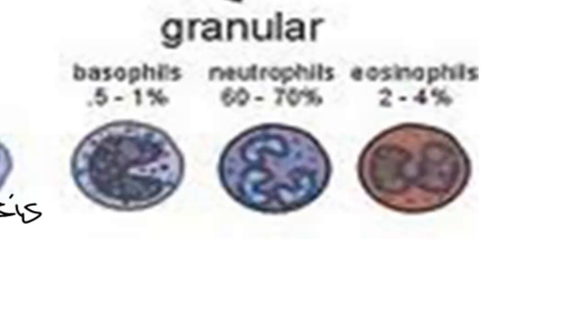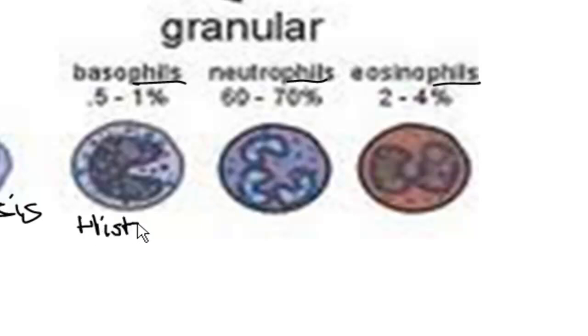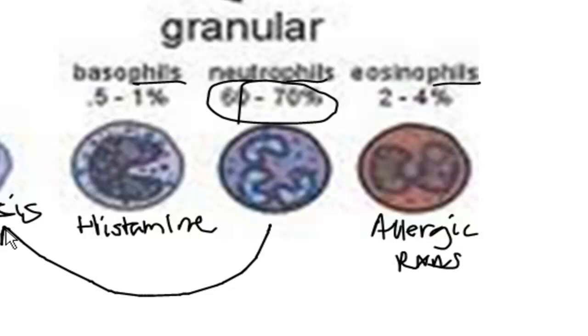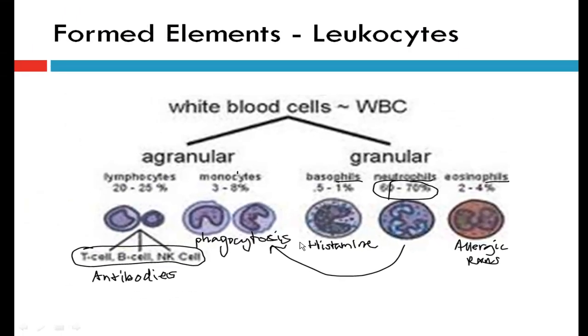On the other end of the spectrum are the granular white blood cells. These all have the prefix or suffix '-phil,' meaning they're filled with granules. Basophils produce histamine, which gets the inflammation pathway started. Eosinophils are involved in allergic reactions. And neutrophils are the most numerous of any white blood cell — they do a similar job to monocytes, munching up foreign invaders in our body.